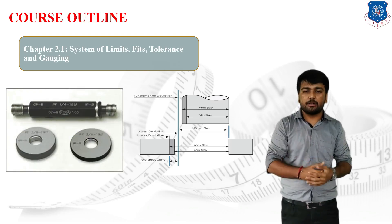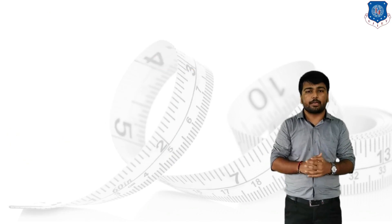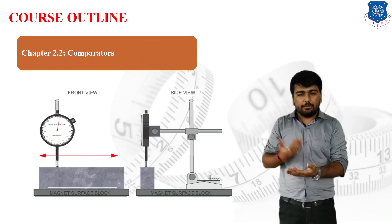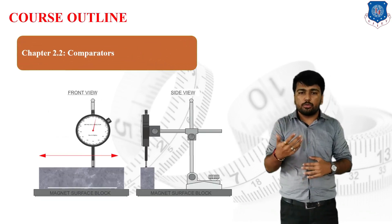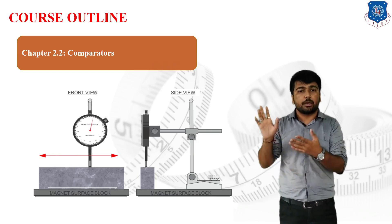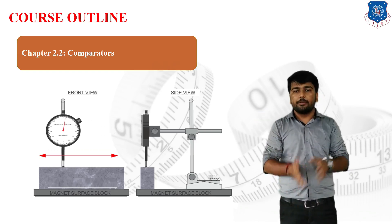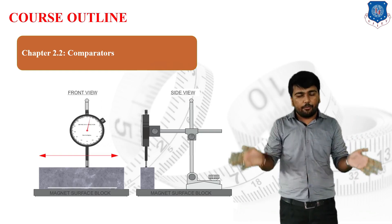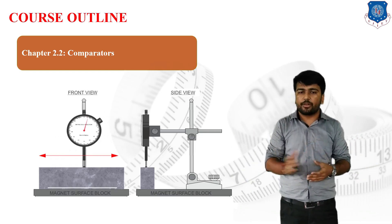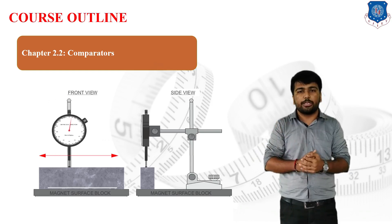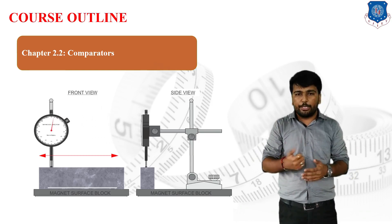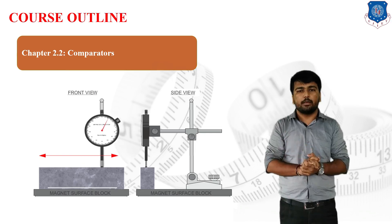The next portion of Unit 2 is the comparator, widely useful in mass production. In mass production, we do not check each and every dimension; instead, we compare our manufactured part with a predefined standard part using comparators. This subject covers 4 mechanical comparators, 1 pneumatic comparator and 2 optical comparators.